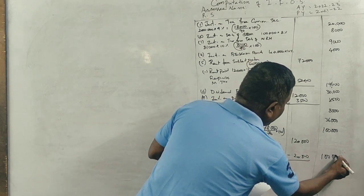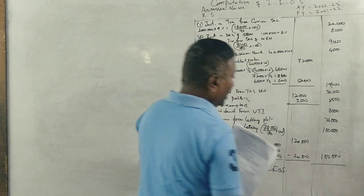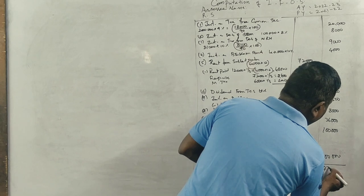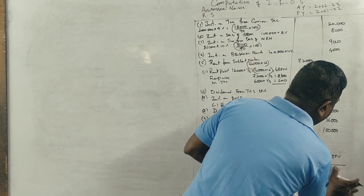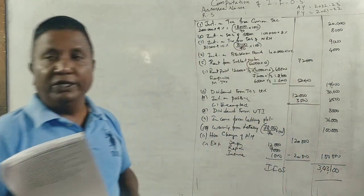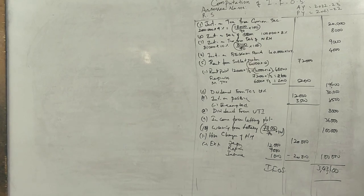So the total income from other sources is 1,00,000.